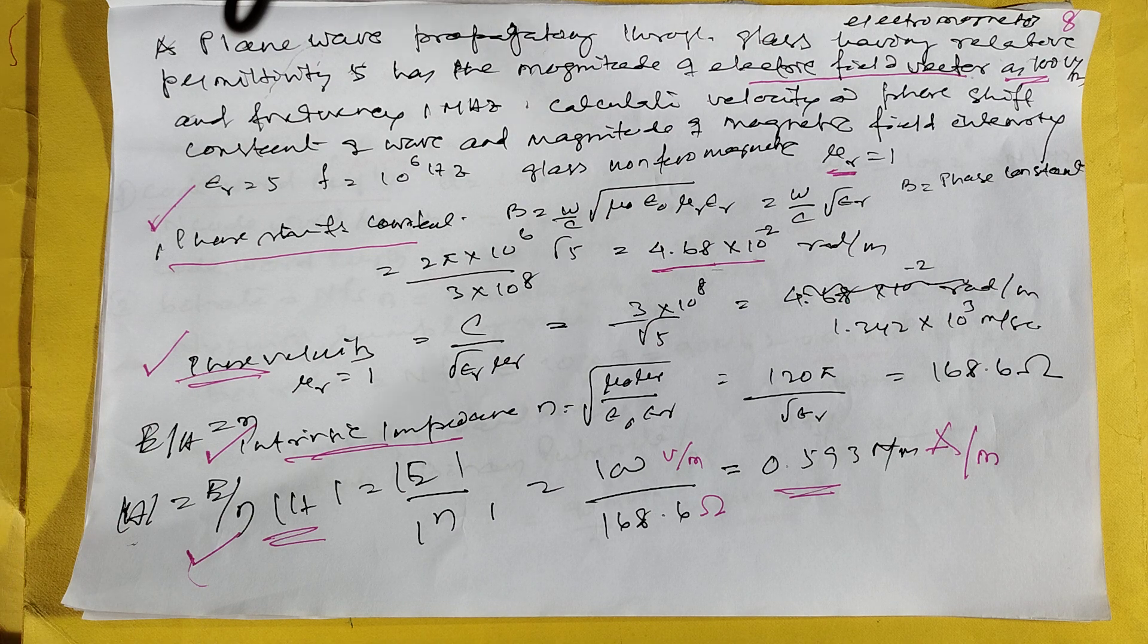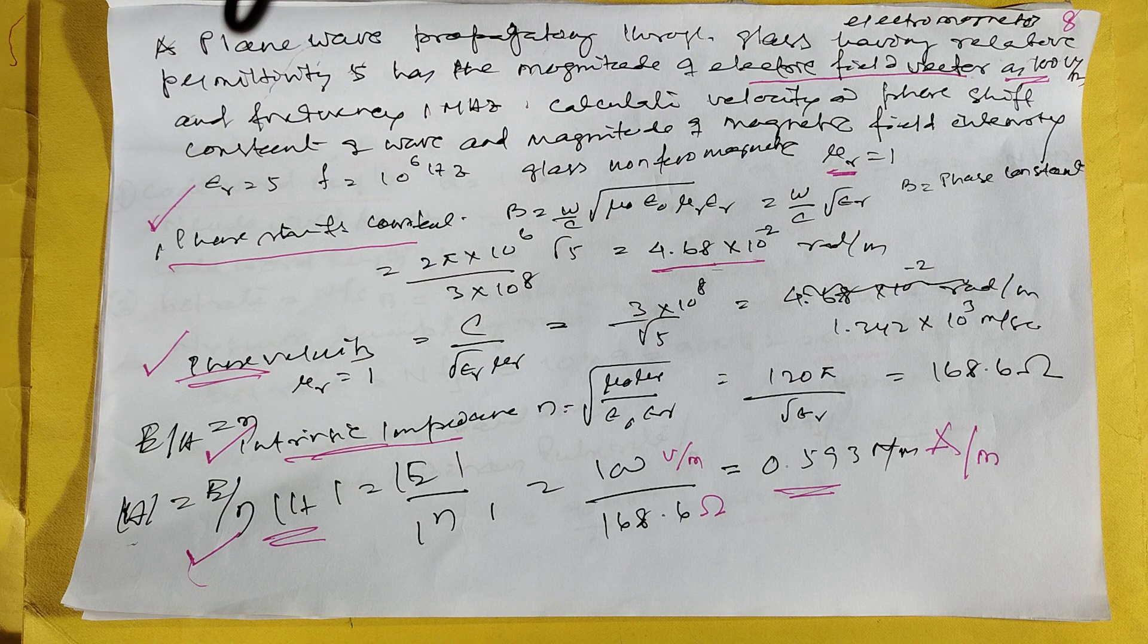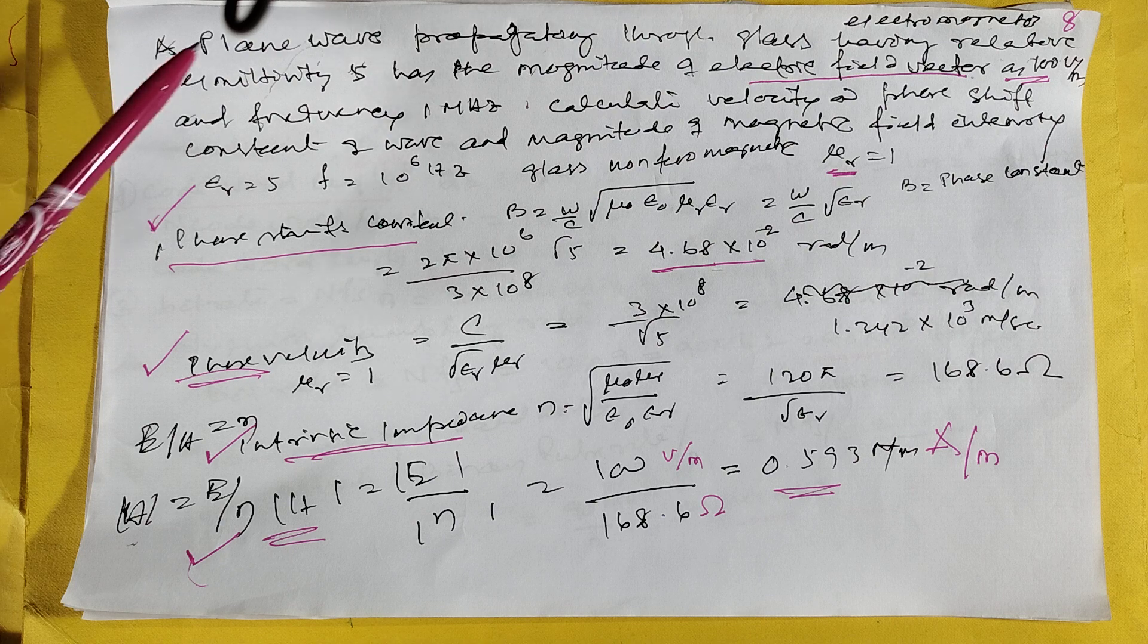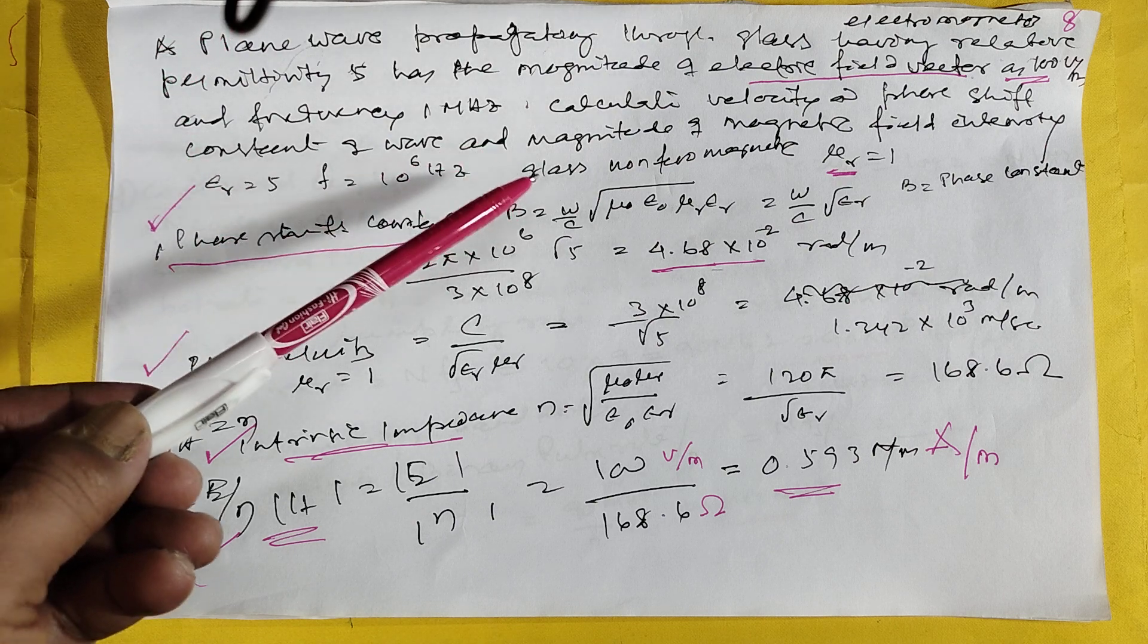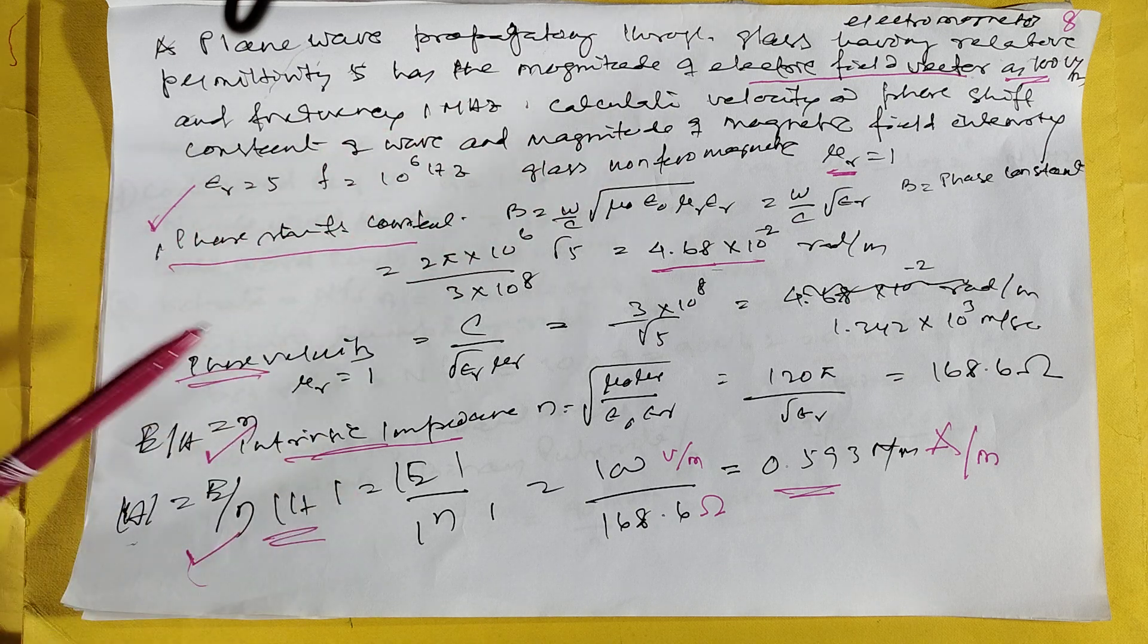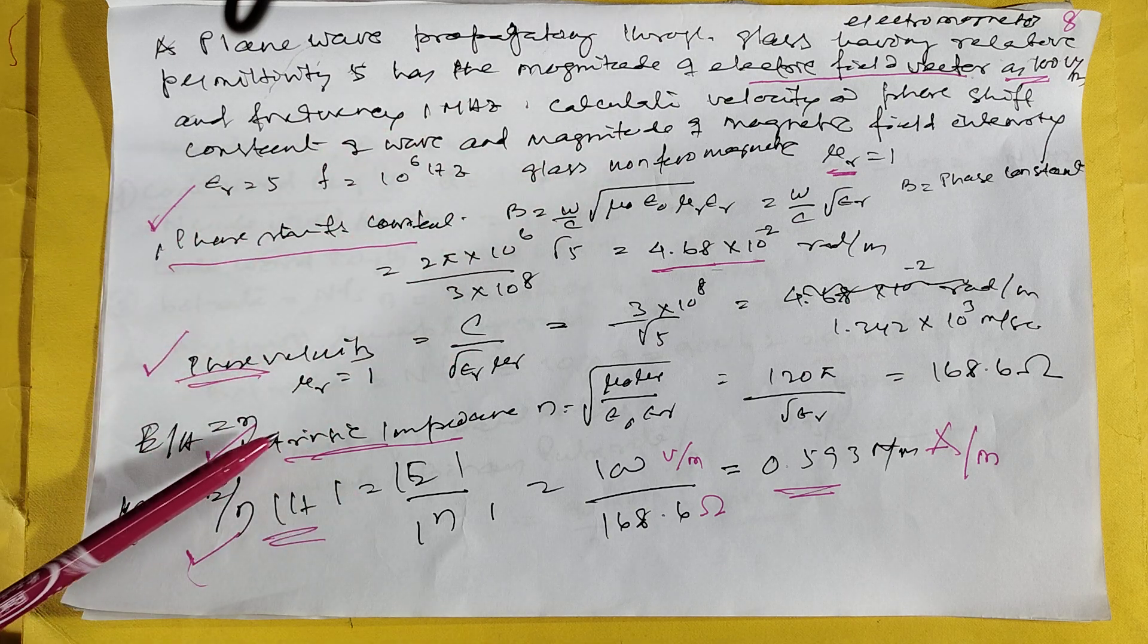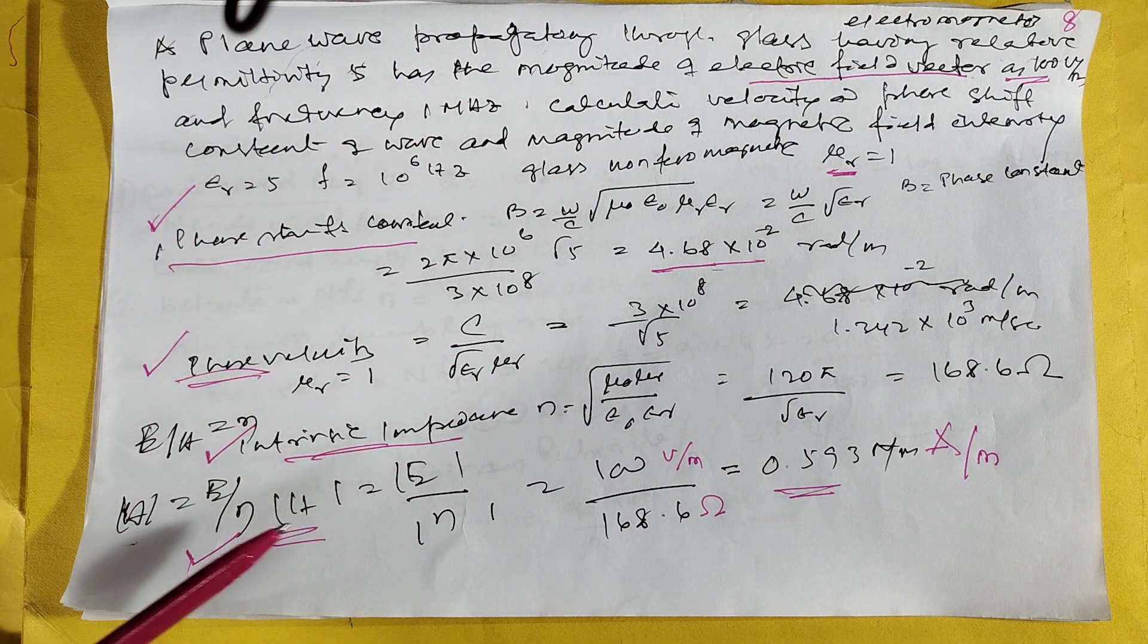Then, this is the plane wave. This is electromagnetics. The plane wave is there. You have to find the phase velocity. This is the formula. All the equations are mentioned here. This is the phase velocity formula, this is the intrinsic impedance formula, this is the H formula.